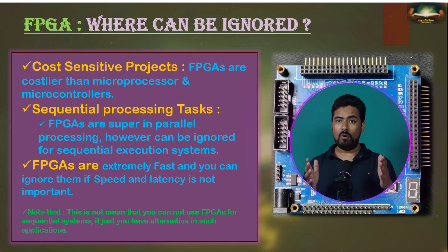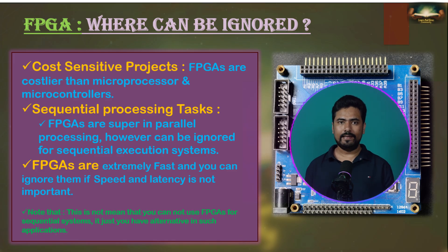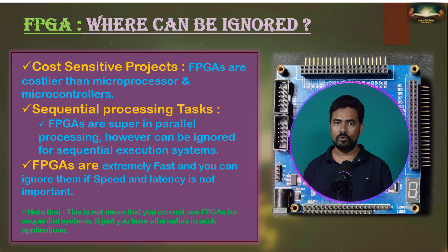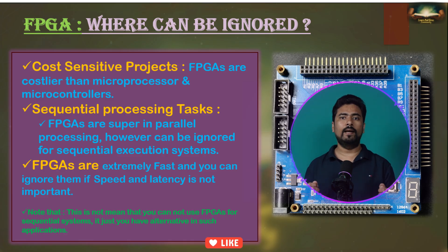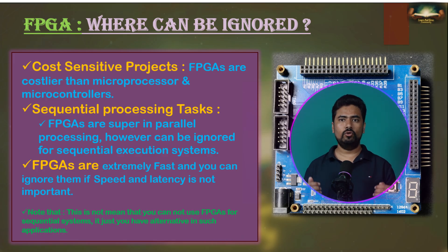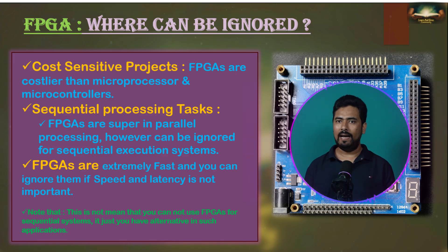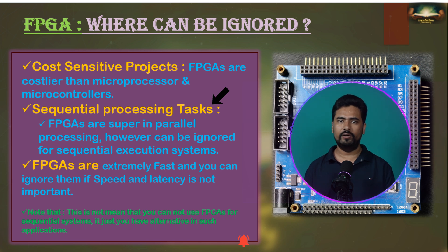Because of their parallel nature, FPGAs are better for intensive data processing applications that involve continuous calculations. Even though FPGAs are powerful tools, there are some situations where they might not be the best choice. For example, cost can be one factor — FPGAs tend to be more expensive than microcontrollers. If you are working on a tight budget and your project does not require the full capabilities of an FPGA, then a microcontroller might be a more economical option. Another consideration is the type of tasks your project involves: FPGAs excel at handling multiple tasks simultaneously, but if your project involves a lot of sequential processing, a microcontroller might be a better fit, as microcontrollers are often optimized for these types of tasks.